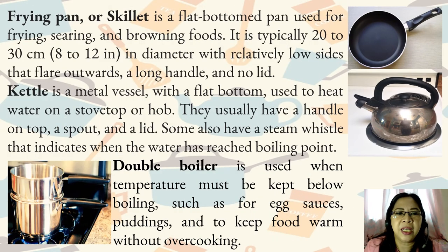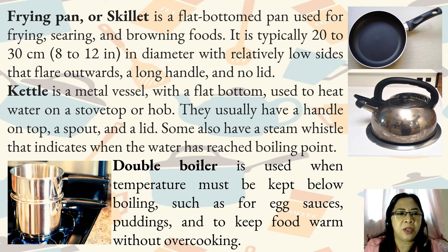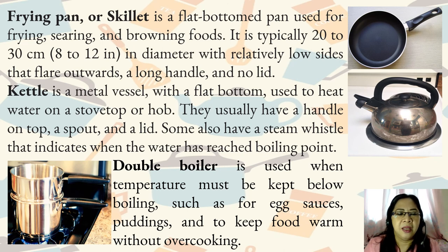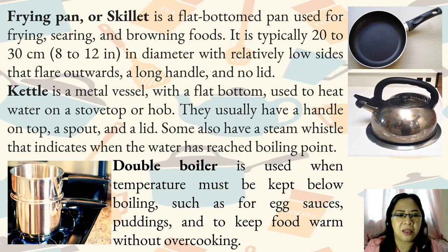Frying pan or skillet is a flat-bottom pan used for frying, searing, and browning foods. It is typically 20 to 30 centimeters or 8 to 12 inches in diameter with relatively low sides that flare outwards, a long handle, and no lid. Kettle is a metal vessel with a flat bottom used to heat water on a stovetop or hub. They usually have a handle on top, a spout, and a lid. Some also have a steam whistle that indicates when the water has reached boiling point.